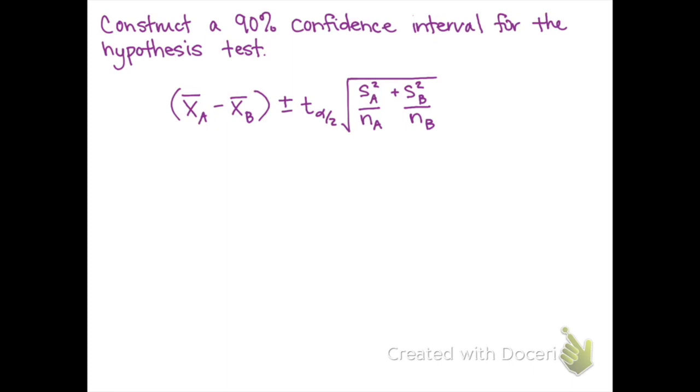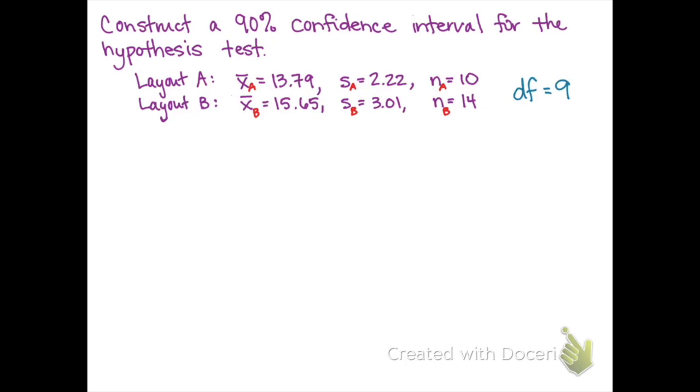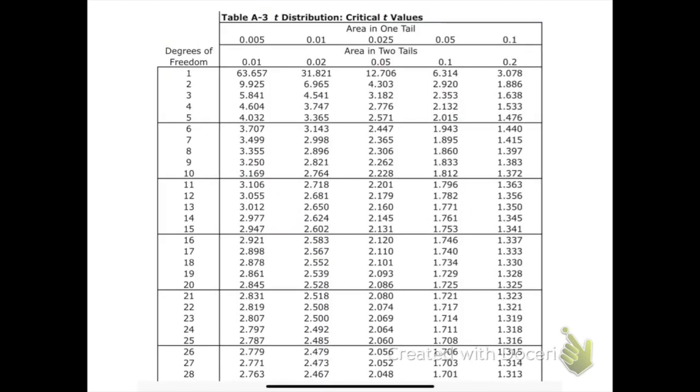Now let's construct a 90% confidence interval for that hypothesis test. Here is our sample data again for layout A and layout B, and then we have the formula for the confidence interval. We have all of the needed information except for the critical t-score, so we'll go to the t-table, and we'll look at 9 degrees of freedom and 90% confidence. 90% confidence is the column that's second from the right, and so we have a critical t-score of 1.833.